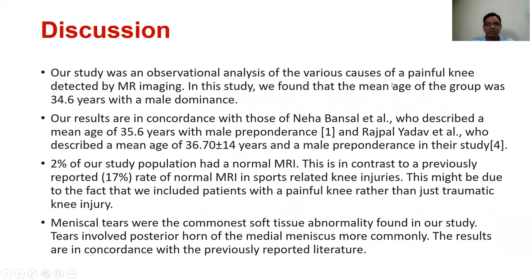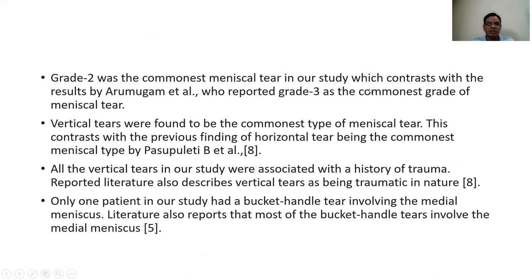Our study was an observational analysis of various pathologies of painful knee detected by MR imaging. We found that the mean age of the group was 34.6 years with male dominance. Our results are in concordance with those of Nyabansalur et al. and Rajpal Yadav et al. Two percent of our study population had normal MRI, in contrast with the previously reported 17% rate of normal MRI in sports-related injuries. This might be due to the fact that we included patients with a painful knee rather than just traumatic knee injuries. Meniscal tears were the commonest soft tissue abnormality found in our study, affecting the medial meniscus more commonly. Grade 2 was the commonest meniscal tear in our study, in contrast with that reported by Arumugam et al. who reported grade 3 as the commonest grade.